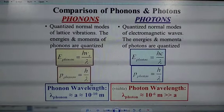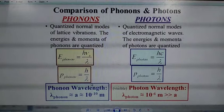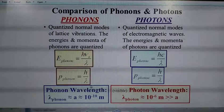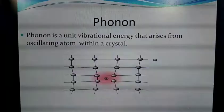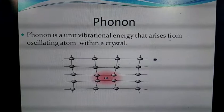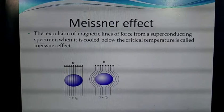The momentum of both phonons and photons is given by h/λ. Regarding wavelength differences, the photon wavelength is around 10 to the power of minus 6 meters, while the phonon wavelength is around 10 to the power of minus 10 meters. These are the basic differences between phonons and photons.